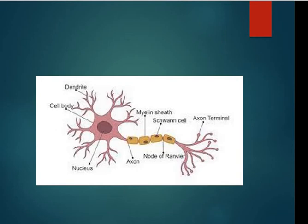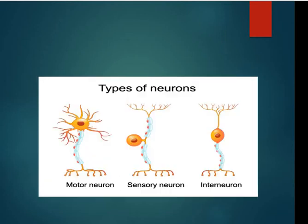The dendrite receives the message. After the axon terminal, the message passes to the next neuron. This is how one neuron passes its message to another neuron — from the body to the brain, or from the brain to different parts of the body. This is how the nervous system works.